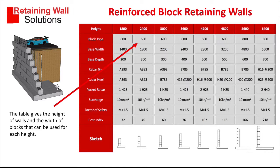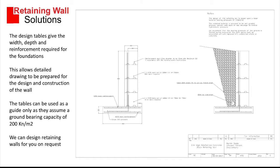The safety factor is 1.5, and the bottom line is the cost index, which I'll explain in a minute. We recommend that all retaining walls are designed by a structural engineer. This is a typical design of a cantilever wall, and the tables assume a ground bearing capacity of 200 kilonewtons per meter square. This needs to be checked by the structural engineer to make sure the wall is going to work for you.